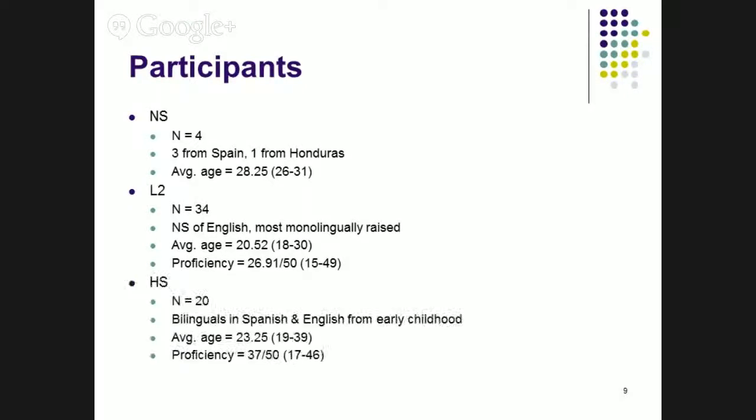Who are my participants? Now you're probably thinking, this study's great. What could possibly be wrong with it? One thing is that I only have four native speakers so far. Three are from Spain, one from Honduras, average age about 28 years old. They are all students at a certain large Midwestern university. L2 speakers, I have 34. I have a fairly large number. Native speakers of English, most monolingually raised. There's one heritage speaker of Chinese and one heritage speaker of Polish. I've got to consider whether or not they'll be included in the final results. A bit younger on average. The proficiency test that we tend to use in the department has a maximum score of 50. So scores range from 15 to 49. Pretty wide range, but most of them are clustered around very low to intermediate low. For heritage speakers, 20. All students at a large Midwestern or a different large Southwestern university. All exposed to both Spanish and English in early childhood. Most of them exposed to Spanish first. A little bit older than the L2 speakers, a little bit younger than the native speakers. I have a similar range of proficiency levels. On the same test, most of them are much higher proficiency. So these two groups aren't currently matched for proficiency yet.